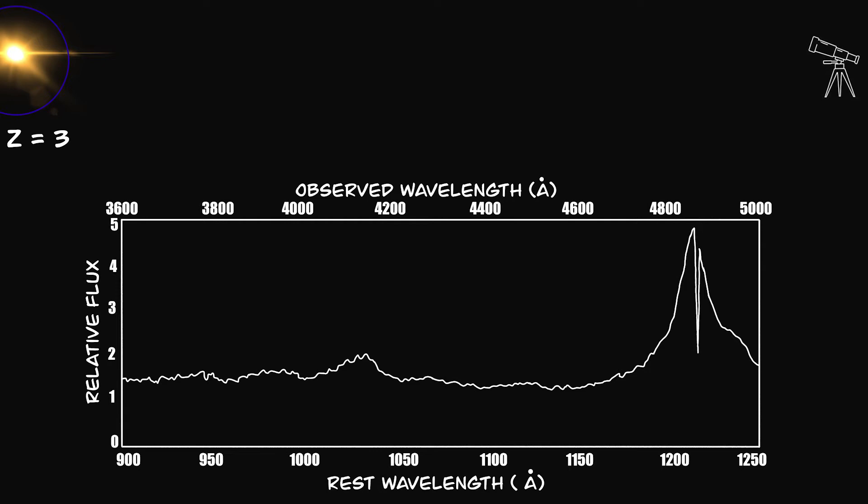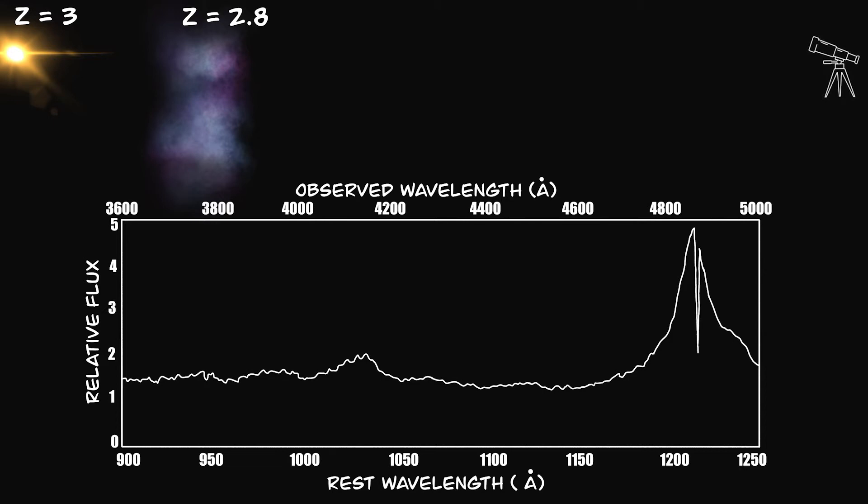But now consider gas at a redshift of 2.8. Here, those photons will get absorbed which started off at a shorter wavelength and by the time they reach here, their wavelength got redshifted to 1660 angstroms. Now they can interact with the hydrogen, so we see a dip corresponding to those photons, right here. Similarly for a gas cloud at a redshift of 2.2, even shorter wavelength photons will get absorbed, and this will happen all the way up to the redshift of zero.